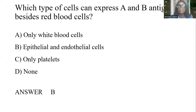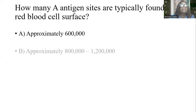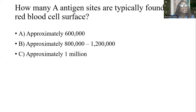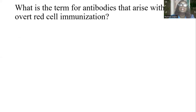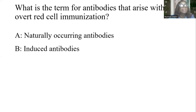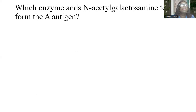Remember that AB antigens can be found on the surface of red cells and also on the surface of other cells, tissues, and organs of the body. How many antigenic sites are typically found on a red blood cell surface? Options: 600,000; 800,000 to 1.2 million; approximately 1 million; approximately 400,000. The answer is B: approximately 800,000 to 1.2 million antigenic sites. What is the term for antibodies that arise without overt red cell immunization? Options: naturally occurring antibodies, induced antibodies, passive antibodies, acquired antibodies. The answer is A: naturally occurring antibodies.